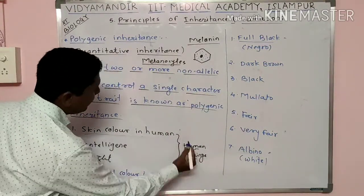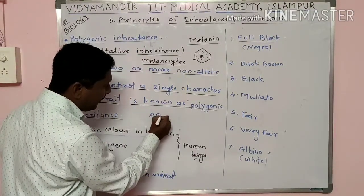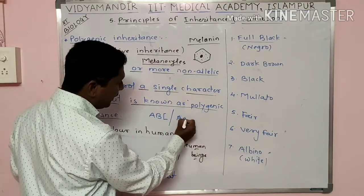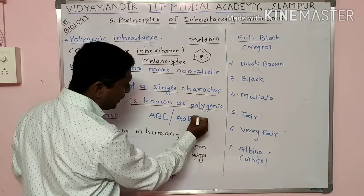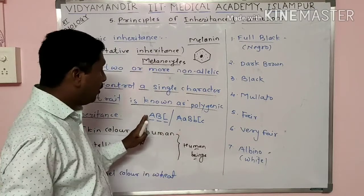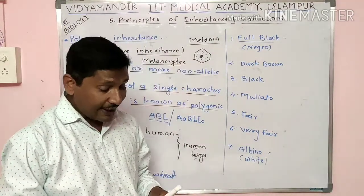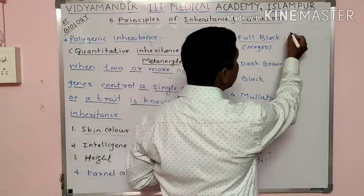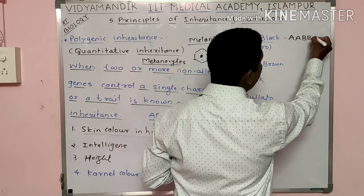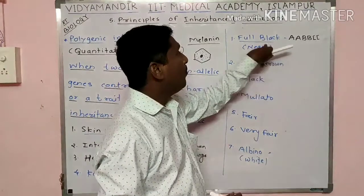Human skin color is controlled by three genes: capital A, capital B, and capital C, along with their allelic forms — small a, small b, small c. These are non-allelic genes controlling this single character. When all alleles are dominant — capital A capital A, capital B capital B, capital C capital C — the skin color is full black.